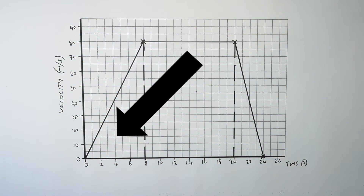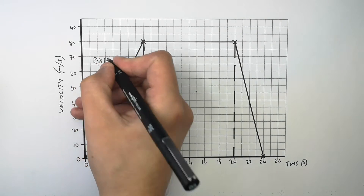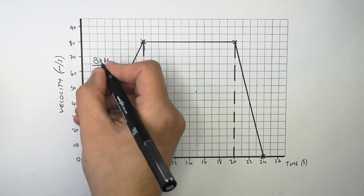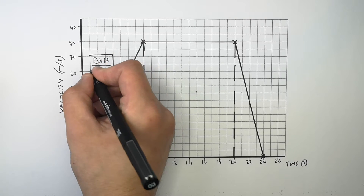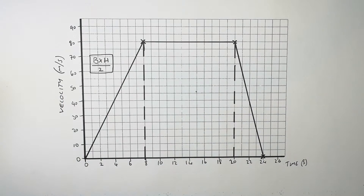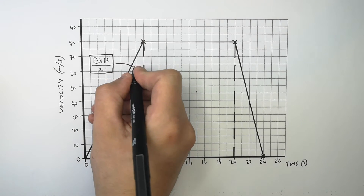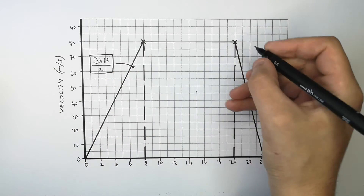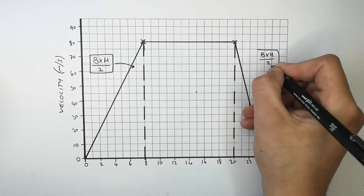To calculate the distance the car travelled while it was accelerating, you must calculate the area of the triangle. To calculate the area of a triangle, you use the equation base times height divided by two. You must first identify the base and the height of the triangle.